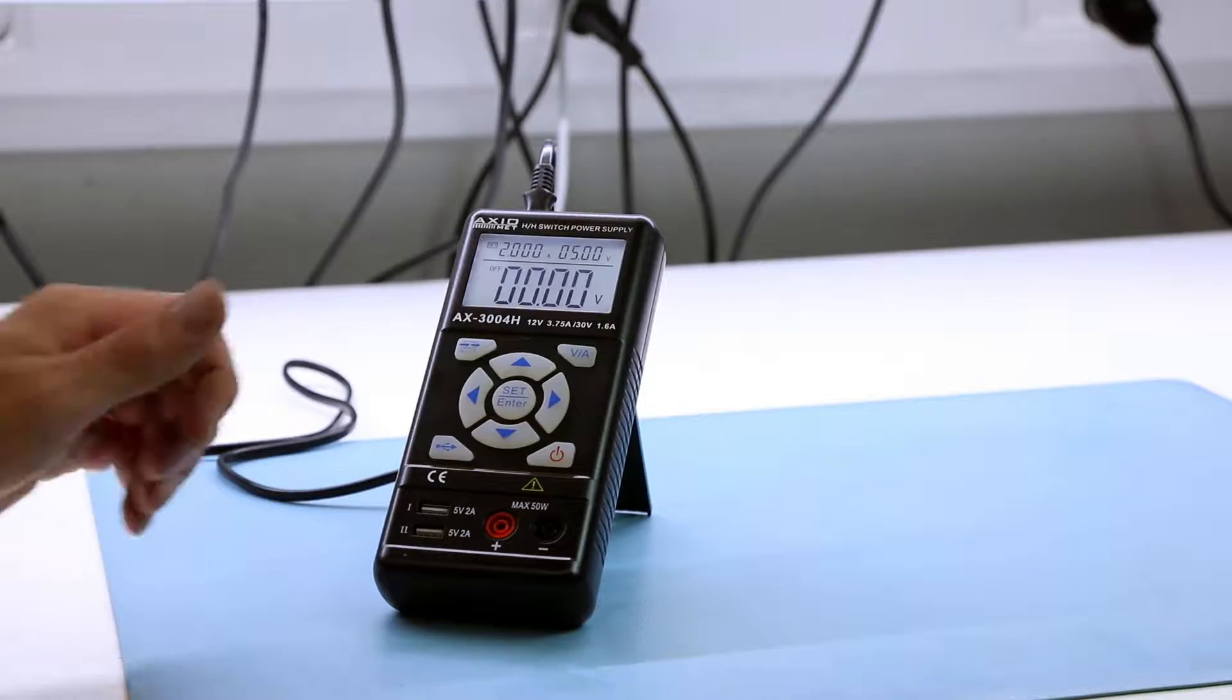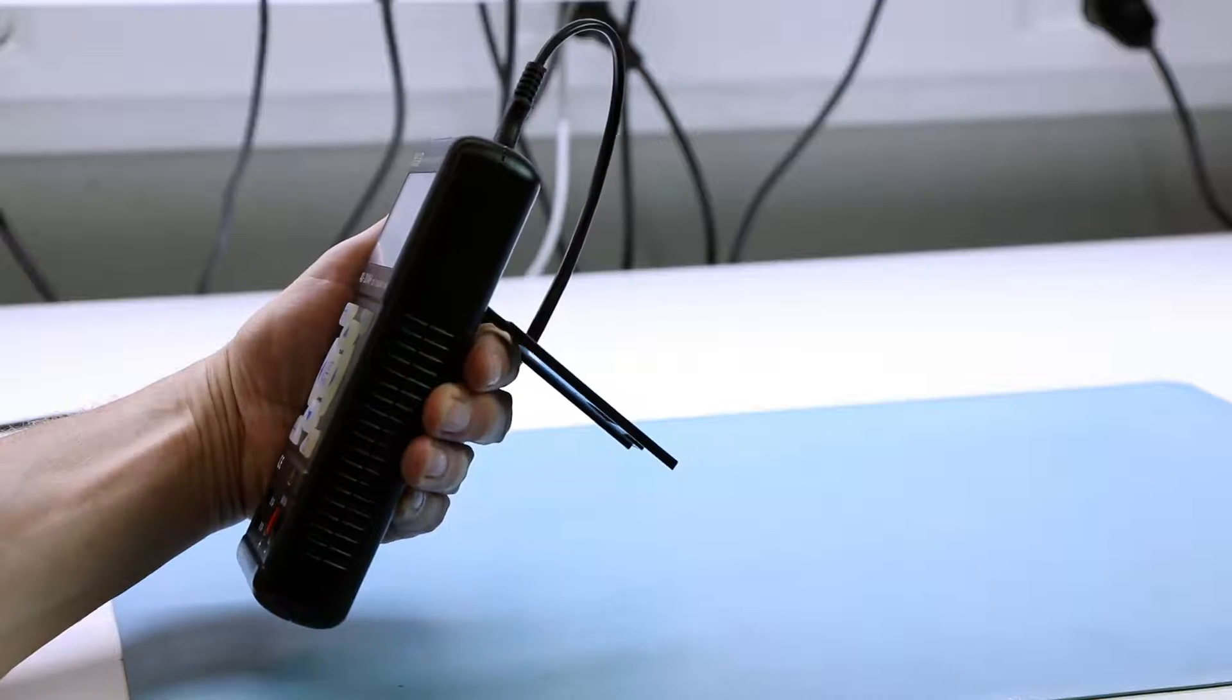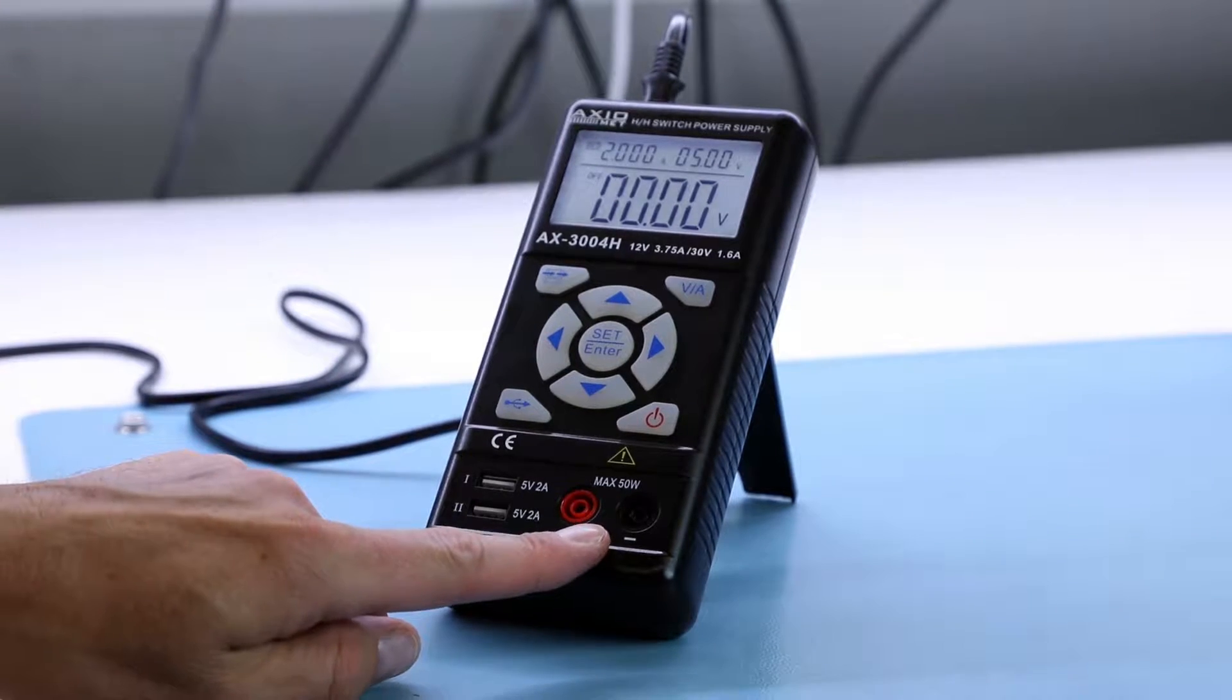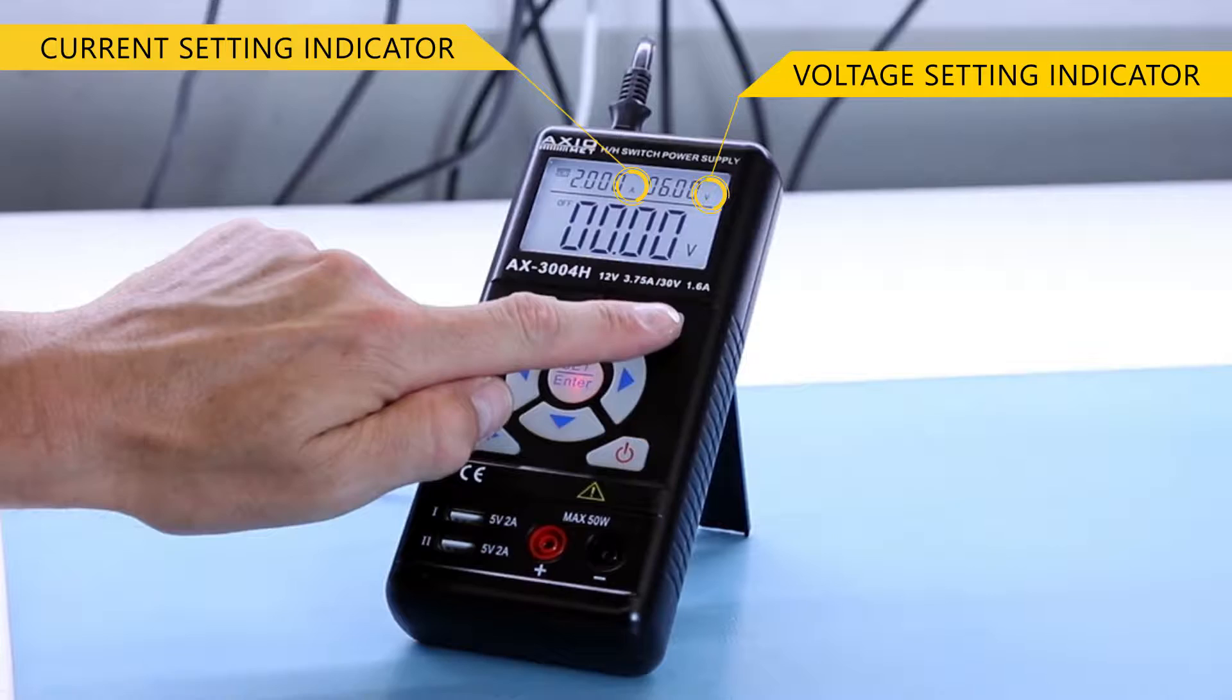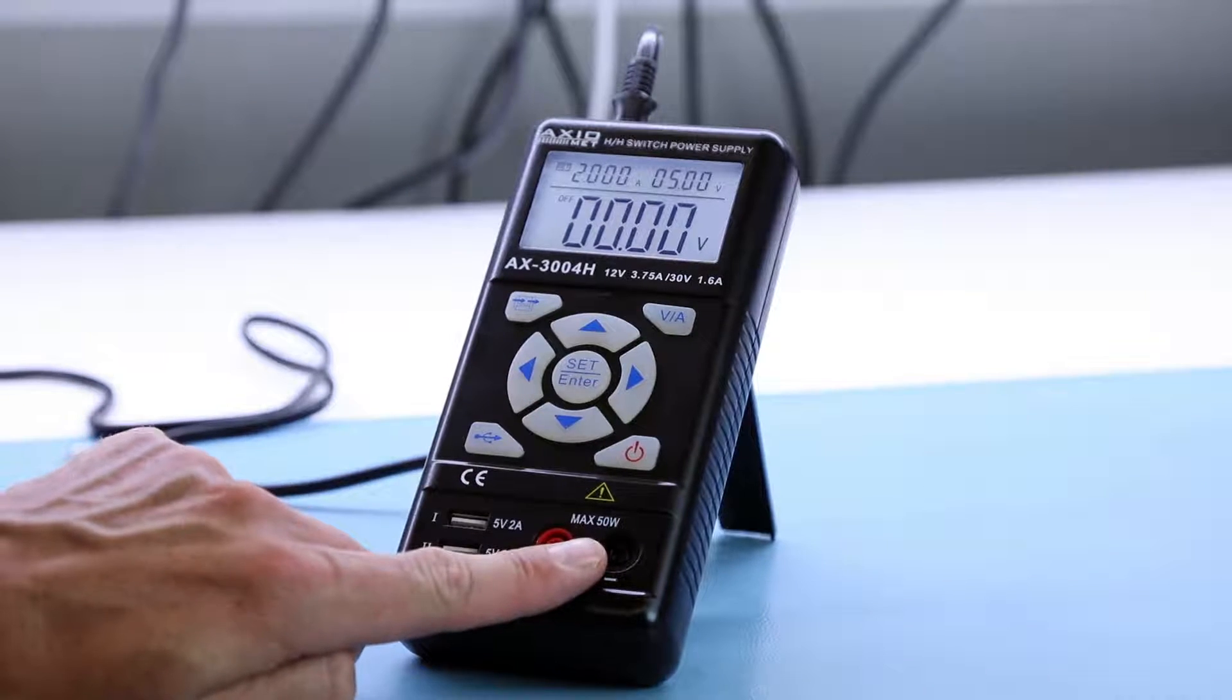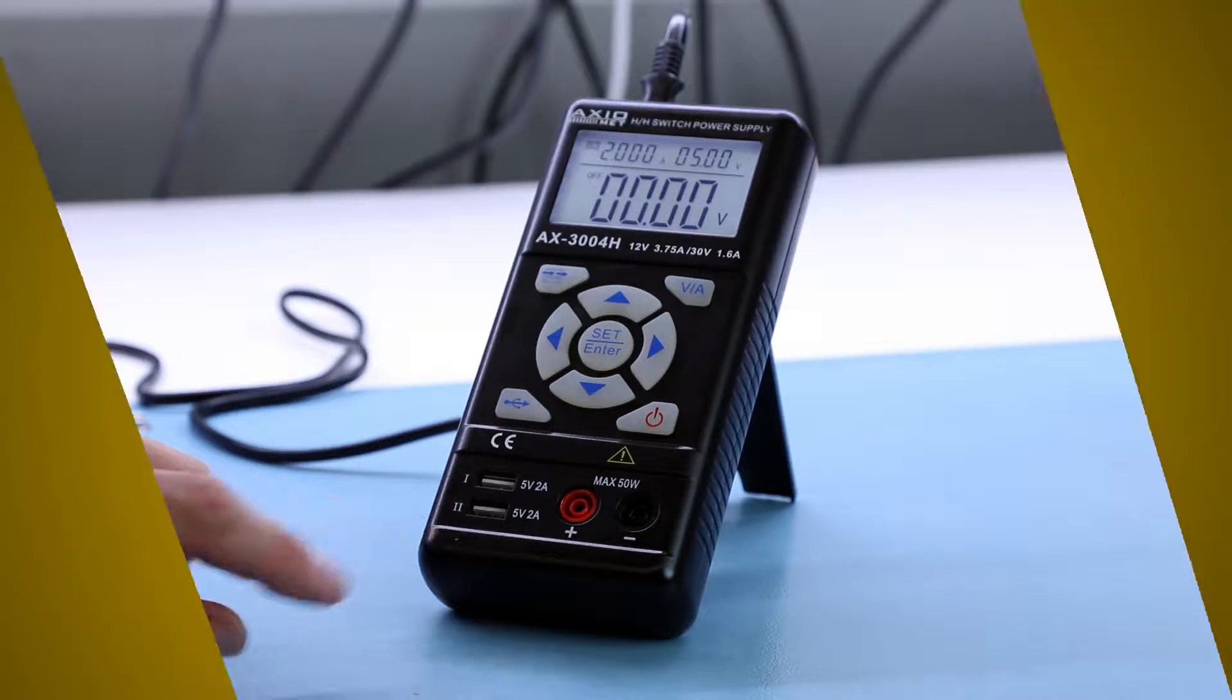The AX3004H is an innovative handheld DC switch mode power supply in a classic multimeter dimension housing. It is a single output power supply with digital current and voltage regulation, maximum voltage of 30 volts and current of 3.75 amps, maximum output power of 50 watts and two USB ports.